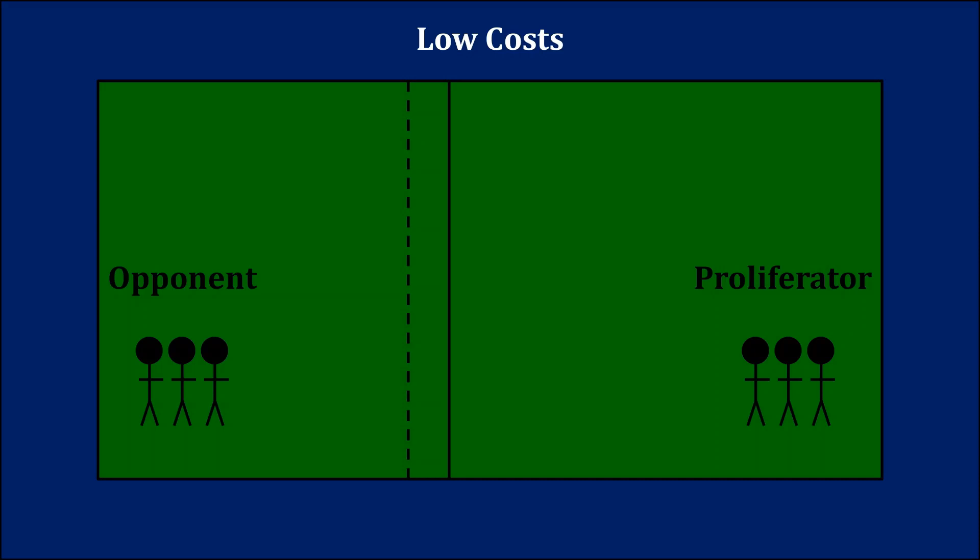Here, I'm picturing a situation where a potential proliferator has relatively low cost to develop nuclear weapons. As a result, the deal in the dashed line, which would occur post-proliferation, is going to be very similar to the deal that's actually made pre-proliferation, represented by the solid line. In contrast, if the potential proliferator has high costs, then the opponent can extract a lot more out of the nuclear agreement.